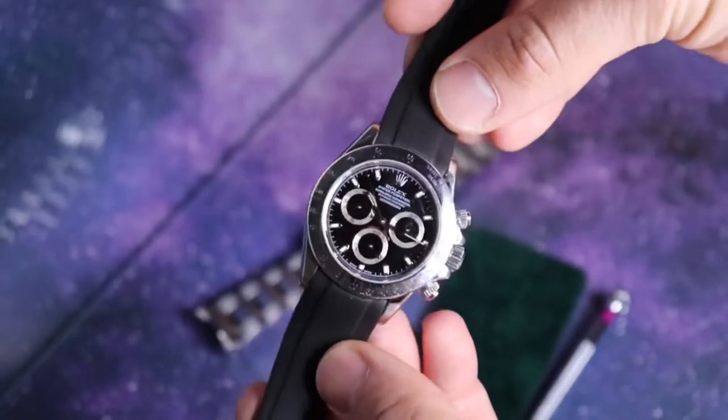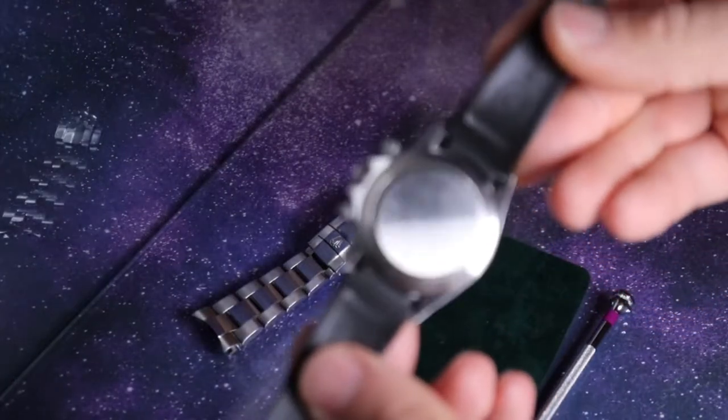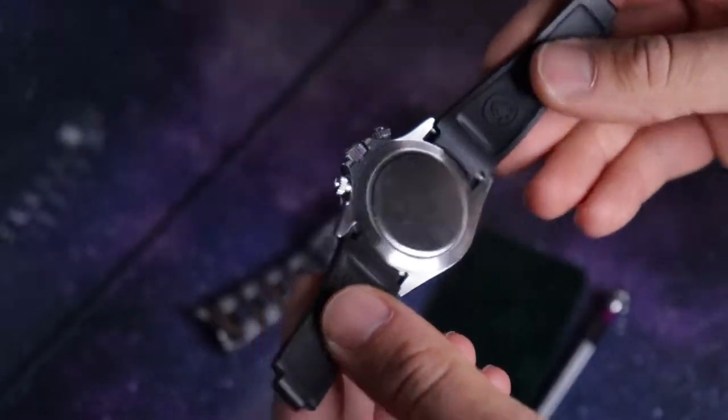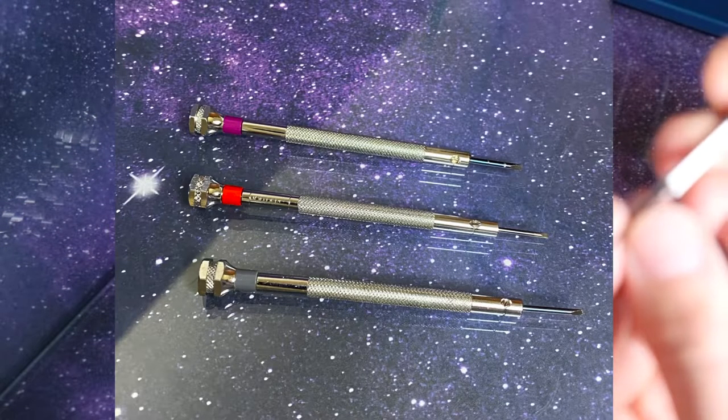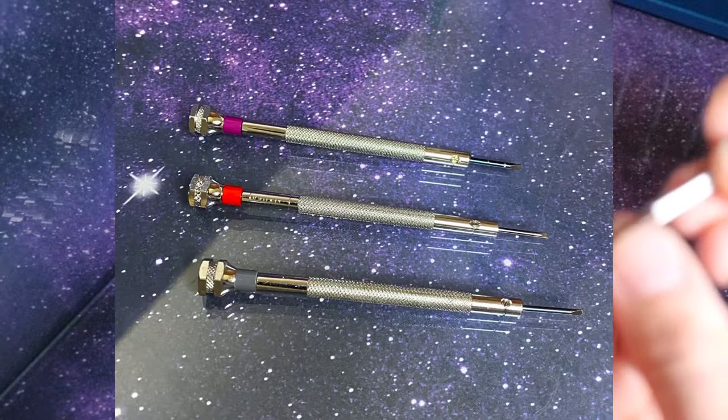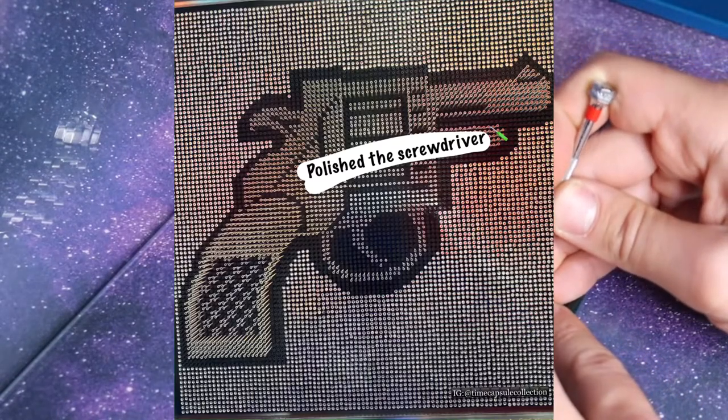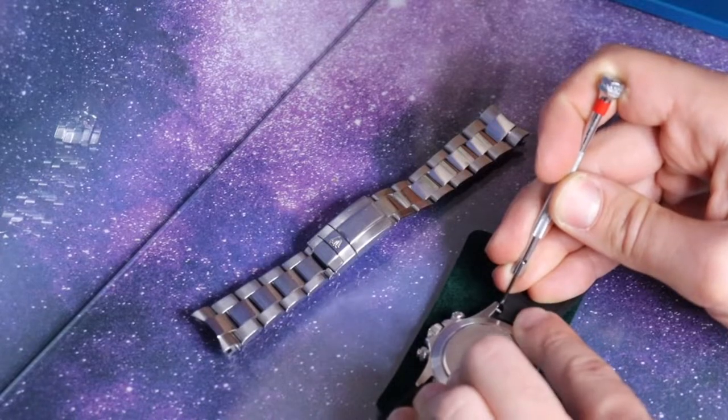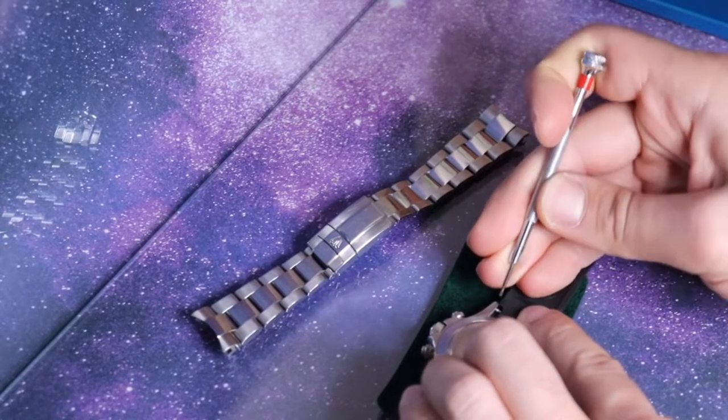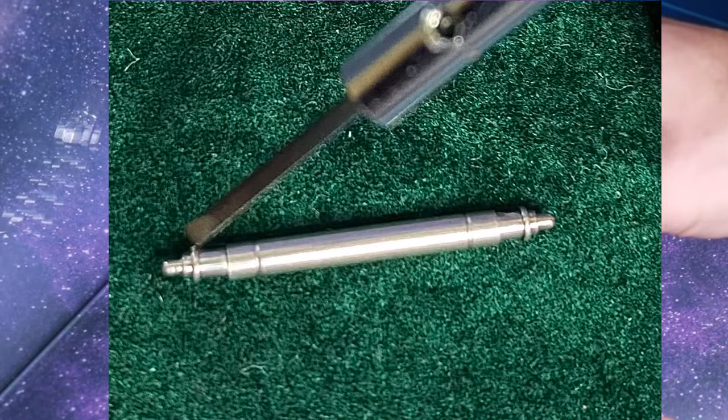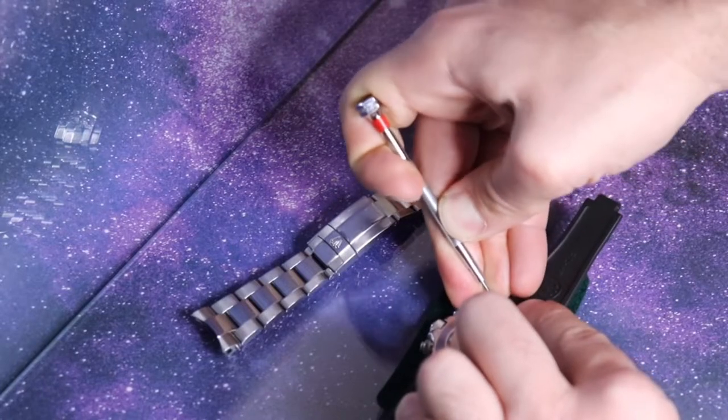Now this is a delicate job. You have to make sure that you really don't scratch this part. You have to be using the correct size screwdriver. In this case I'm going to go with my red screwdriver, I just polished this recently. So I'm going to go on the edges here on this side. There are two shoulders usually on these spring bars and you're going to be just pulling the shoulders towards yourself.